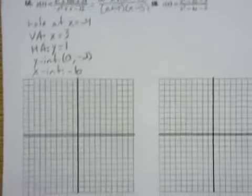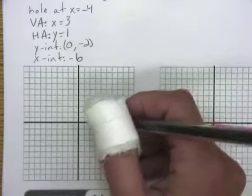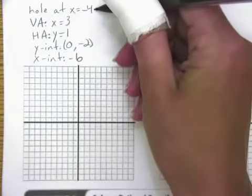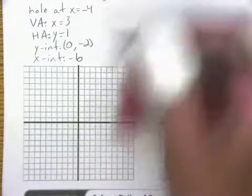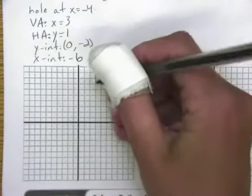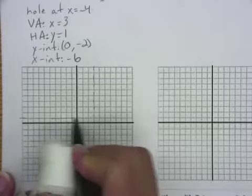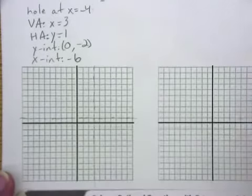And we've found all of our important points and asymptotes. Let's go ahead and graph this. So, I take all of this information and put it on my grid. I'm going to wait until the end to do something about that hole. So, I have a vertical asymptote at X equals 3.